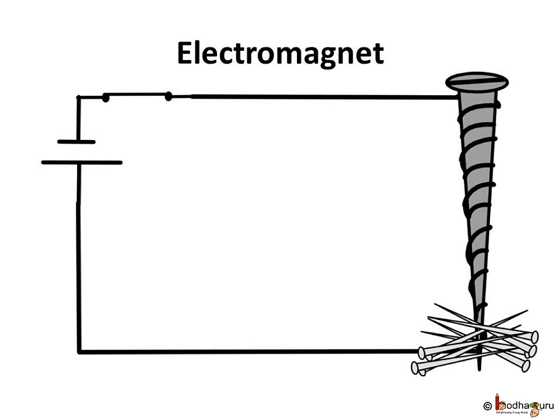Also, a current carrying coil of an insulated wire wrapped around a piece of iron is called an electromagnet. The power of this electromagnet can be increased by increasing the number of turns of the coil.